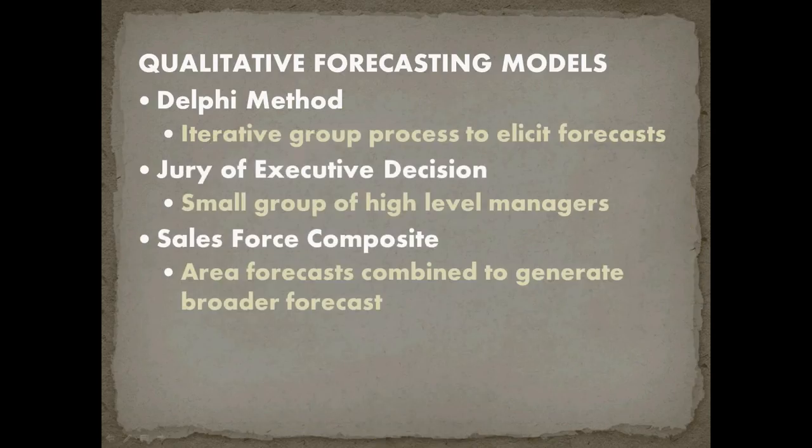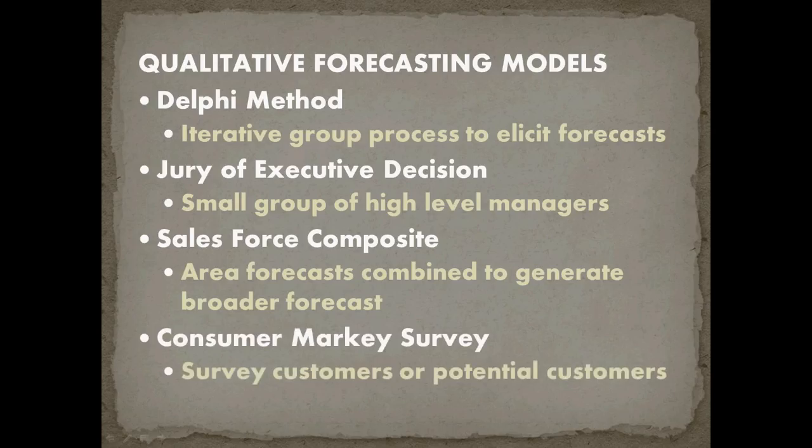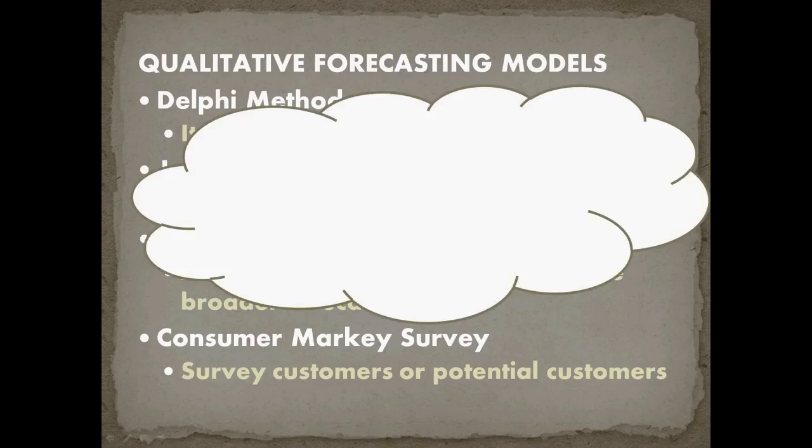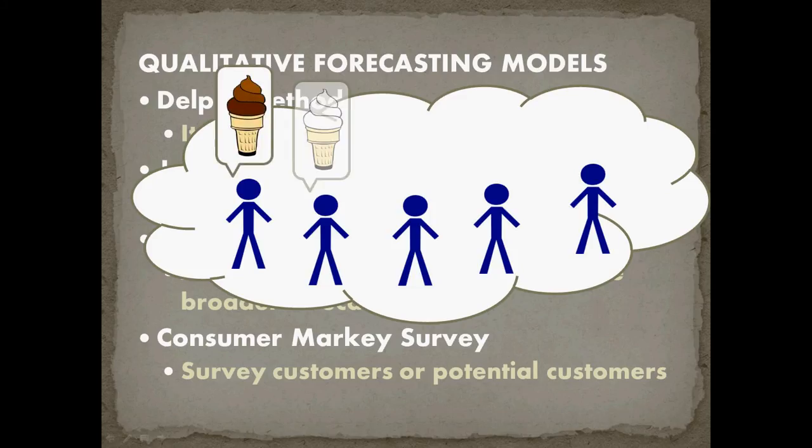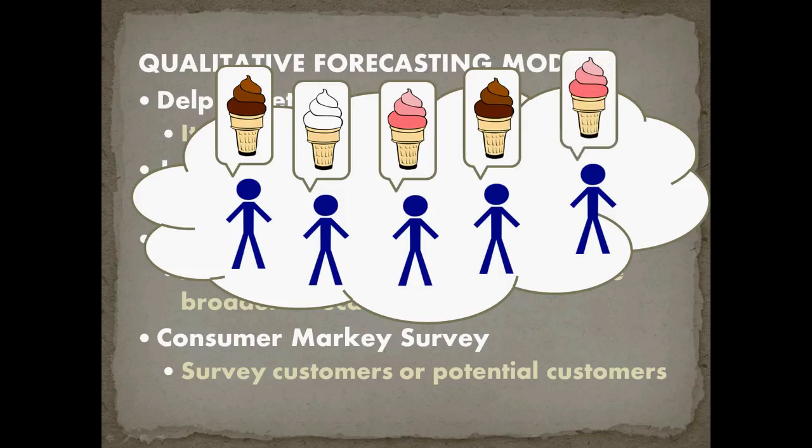The final qualitative forecasting model which you should be aware of is consumer market surveys and in this case you just survey your customers or potential customers about what they're likely to want in the coming period. So I run an ice cream truck for example and I have my potential customers and I can literally just ask them what type of ice cream are you likely to buy tomorrow so I stock my truck appropriately. So if I get chocolate, vanilla, strawberry, chocolate, and vanilla, strawberry, I know how to stock my truck for the next day and hopefully that should give me a good forecast of what will actually be in demand.